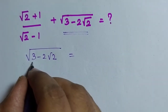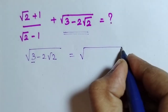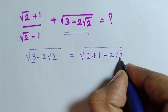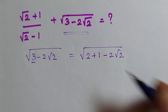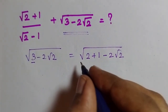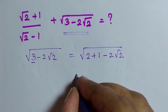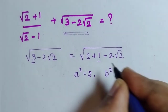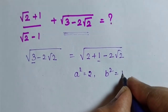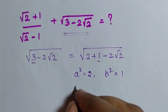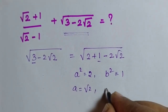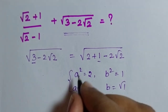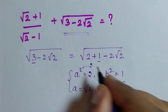I am going to write 3 as 2 plus 1 minus 2 root 2. Now I am going to assume a letter for these values: I am going to take a² = 2 and b² = 1. So I will get a = √2 and b = √1. Just substitute these variables in the equation.